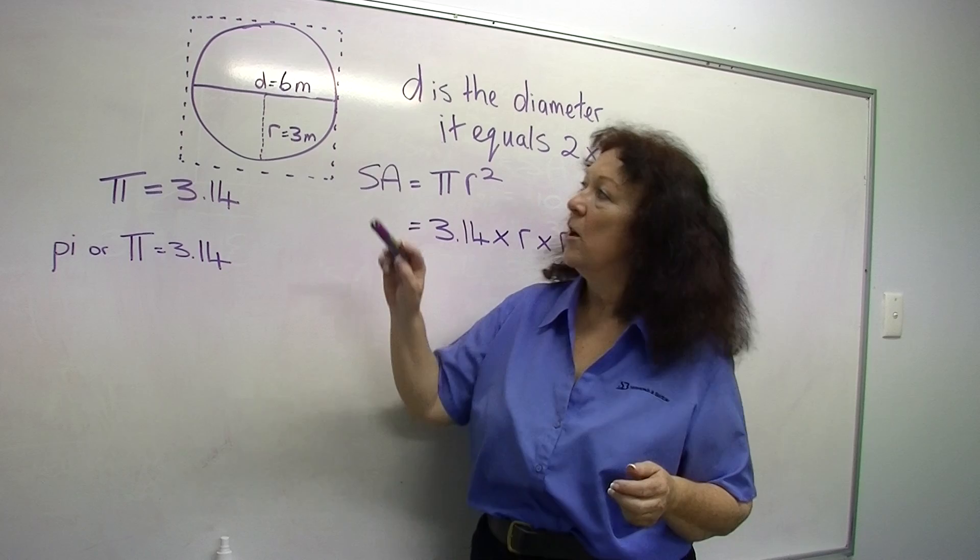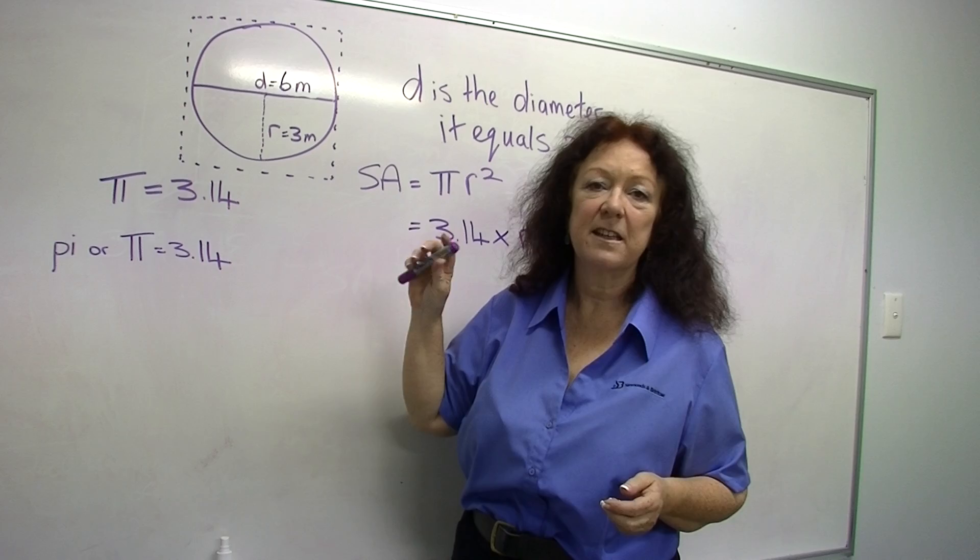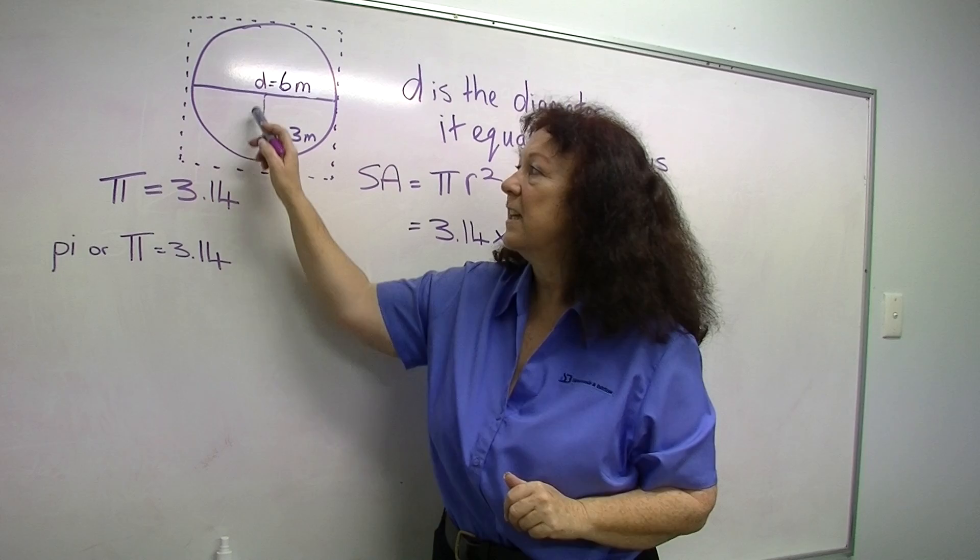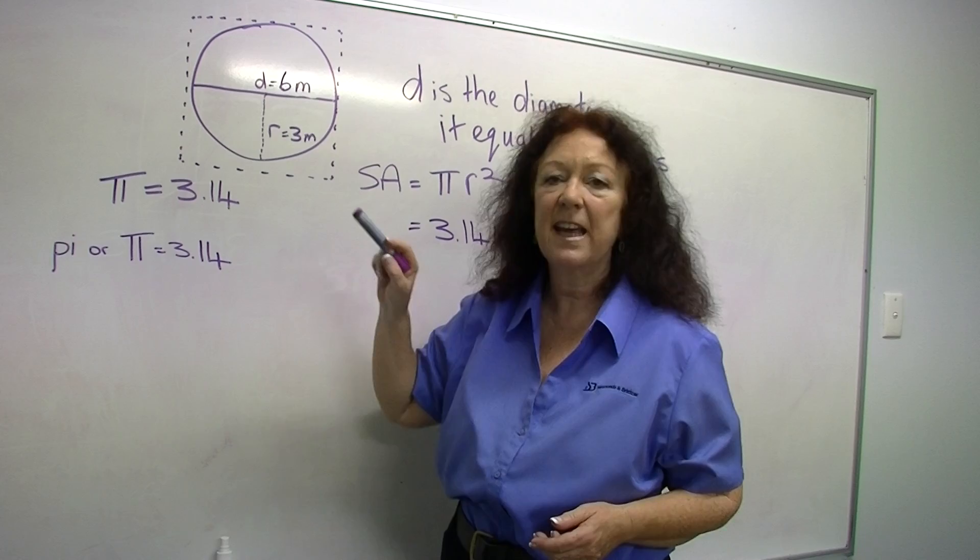We're also going to need to know either the diameter or the radius. The diameter is the length right across the fattest part of the circle, as if you'd folded it in half. Half of that is the radius. That's as if you'd just taken a point smack dead centre and drawn a line out to the edge of the circle.